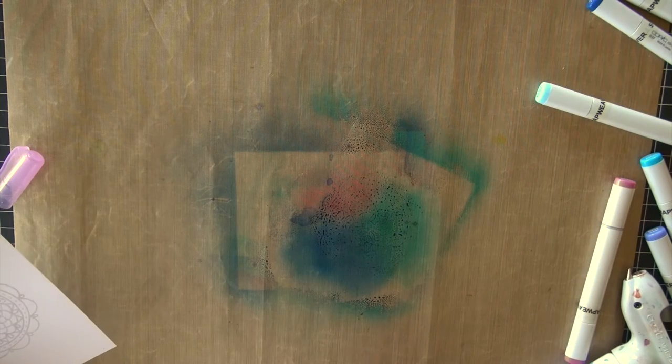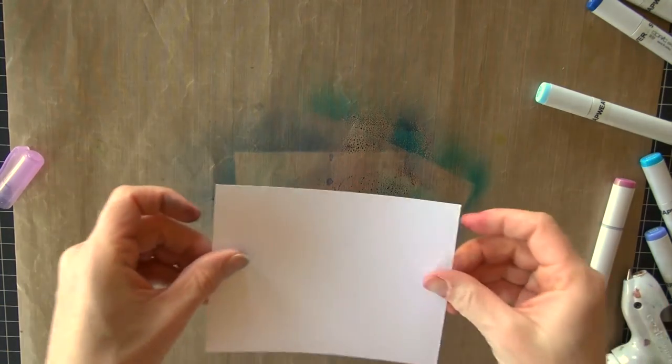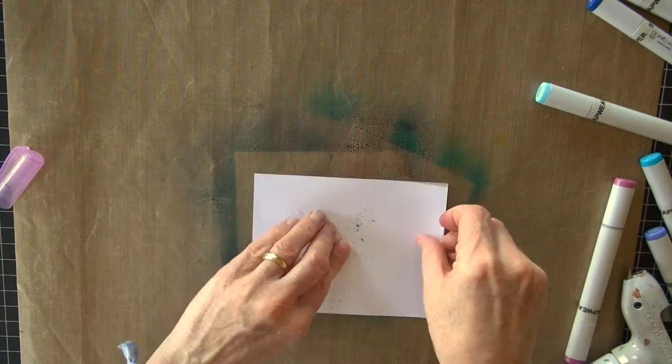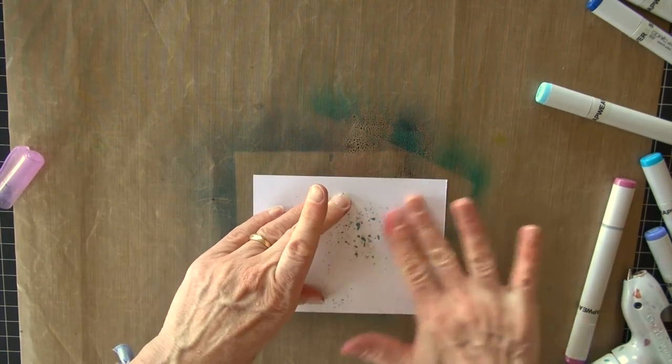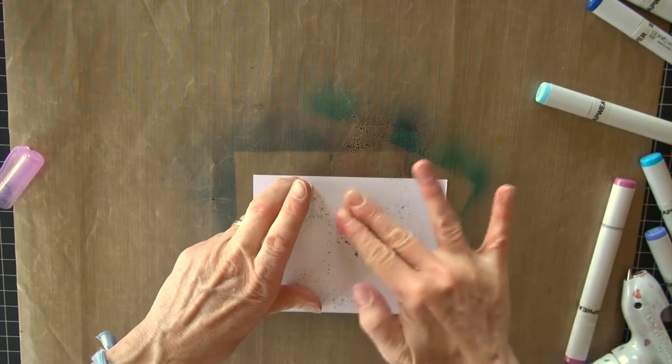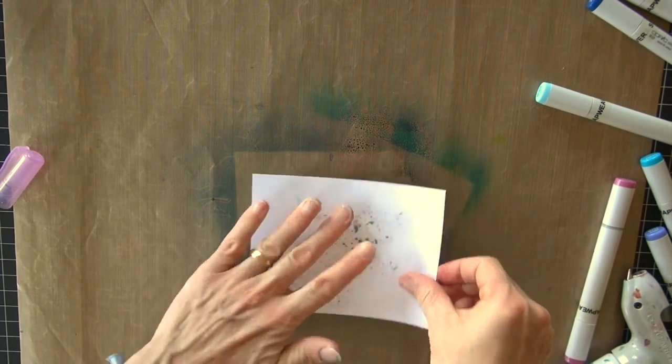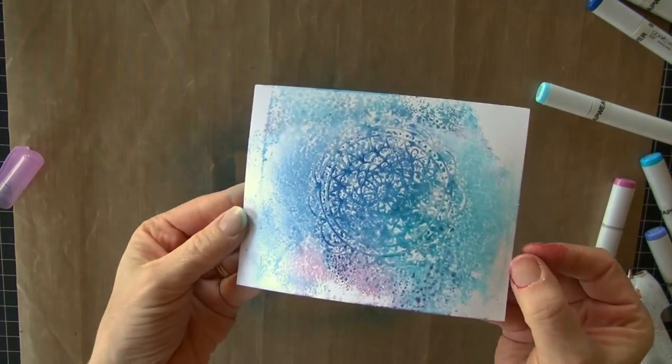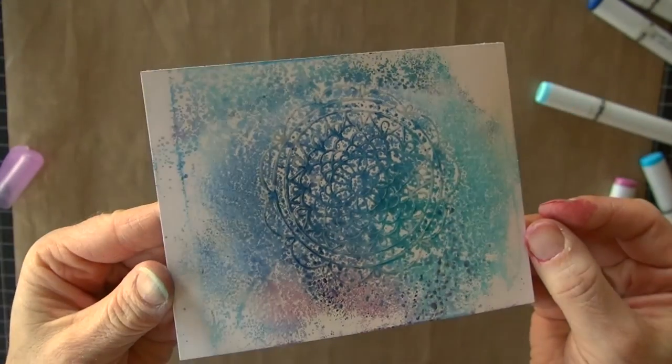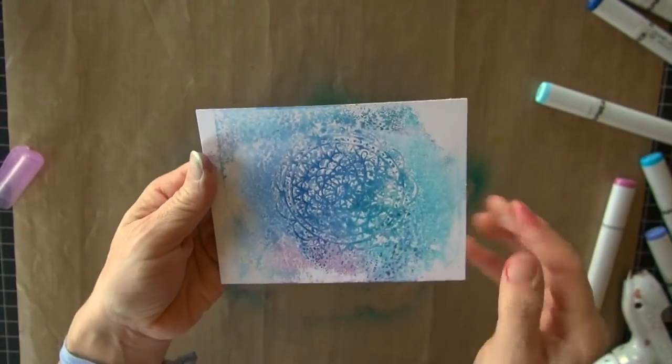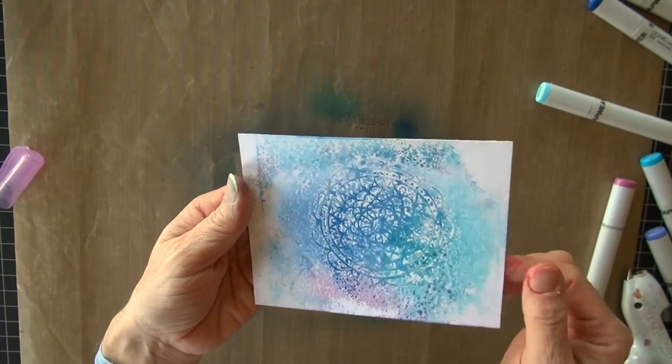So once again, I'm going to reactivate that ink. Two or three little mists. I'm going to lay that doily stamp that's embossed right down in the middle. And I've got this neat, beautiful kind of mottled looking, but I've lost some of my embossing.